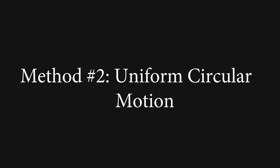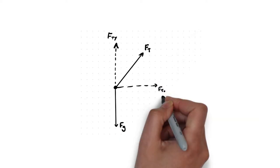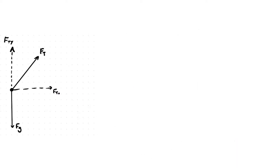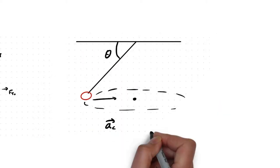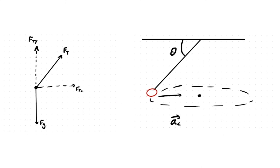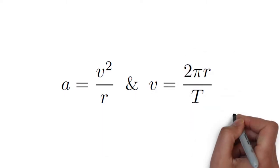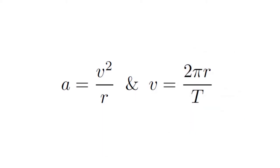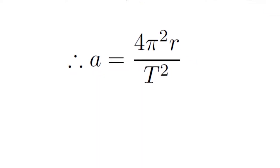For the toy plane experiment, we used uniform circular motion and two-dimensional dynamics to determine g. We used a plane attached to the ceiling with a string; when the plane flies, it flies in a perfect horizontal circle. Because it flies in a perfect circle, it has a constant centripetal acceleration towards the center caused by the tension force from the string. In uniform circular motion, acceleration equals velocity squared over radius, and velocity equals 2πr over the period, so acceleration equals 4π² times the radius over the period squared.